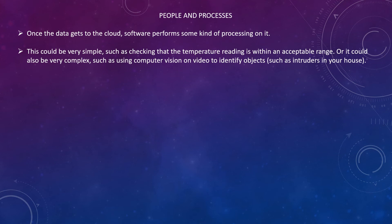Once the data is collected and sent to the cloud, software performs processing on that data. This could be very simple, such as checking whether a temperature reading is within an acceptable range, or very complex, such as using computer vision on video to identify objects like intruders in your house. The result of this processing gets viewed by the end user — it can be achieved by triggering an alarm on your phone, or notifying via text or email. For example, if an intruder comes to your house, you will get an alarm message or text saying an unknown person is at your home.